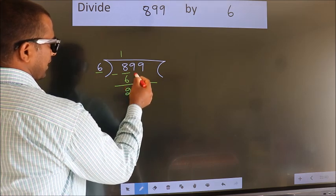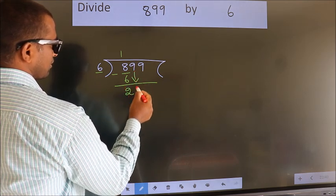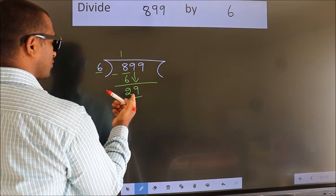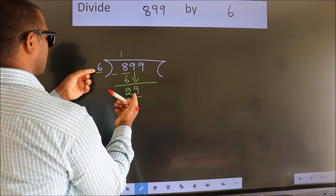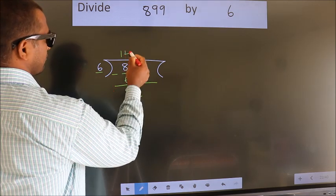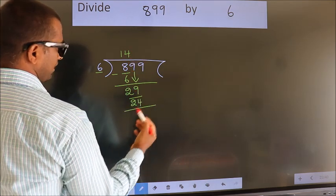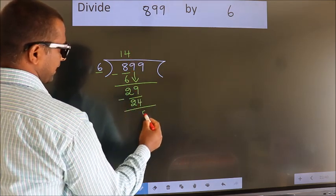After this, bring down the next number. So 9 down. So 29. A number close to 29 in 6 table is 6 fours, 24. Now we subtract. We get 5.